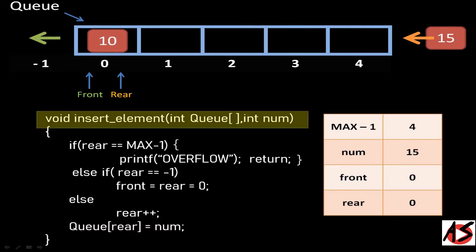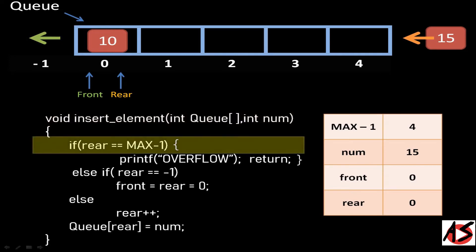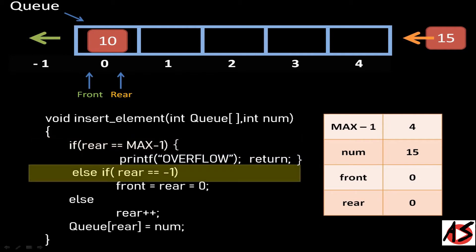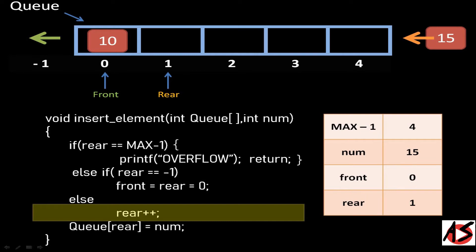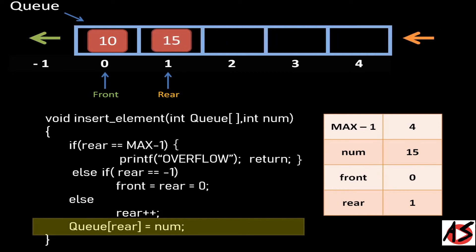Now if we want to insert another element, 15, it will be stored in the number variable. It checks the condition rear equal to max minus 1. Since rear is 0 and not equal to max minus 1, that is 4, the condition is false. It then checks the second condition: rear equals minus 1. This is also false because the current value of rear is 0, not minus 1. Therefore it goes to the else part, where it increments the value of rear by 1 to 1, and stores the number value 15 at the first position of the Queue array.